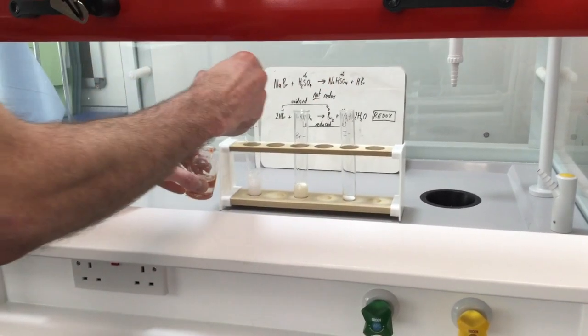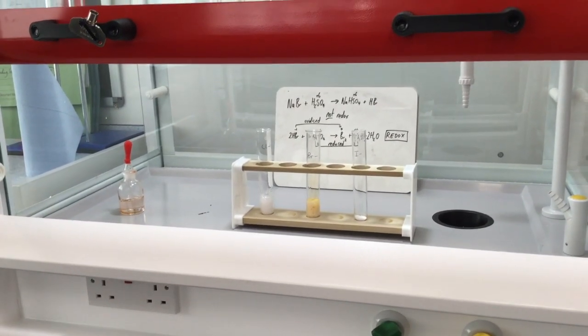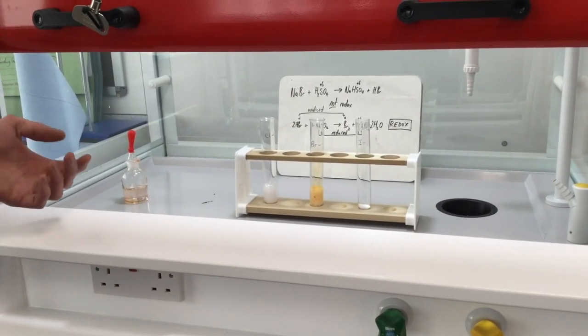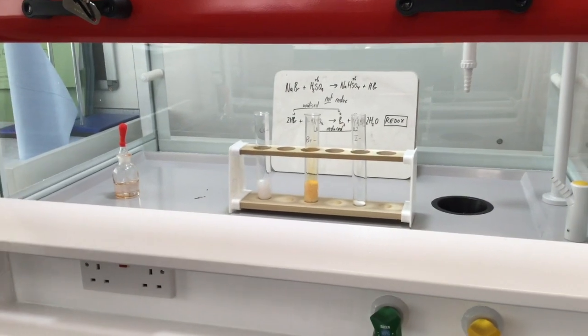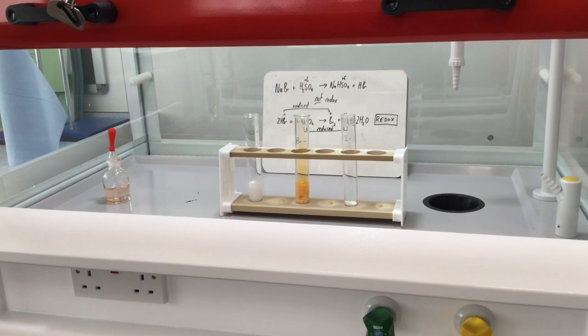We've got the same white misty fumes and the same reaction but we've also got an orange colour. The orange colour is the colour of bromine being produced, the elemental form of bromine. You might get some bromine fumes because your reaction gets quite hot and it turns into a gas.